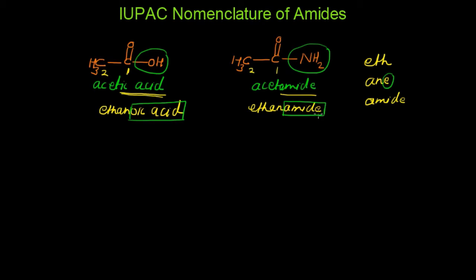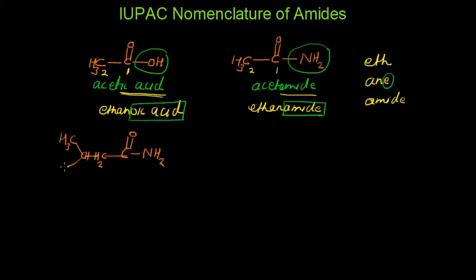While giving the IUPAC names to any amides, we must replace '-oic acid' with '-amide'. Let us take some examples of amides — substituted examples. Let us say we have a structure like this: CH2, then CH, then CH3, and here also we have CH3. Now let us start the numbering for this compound.